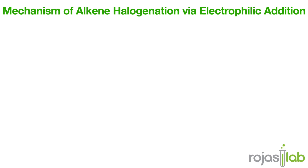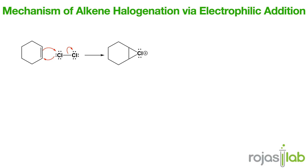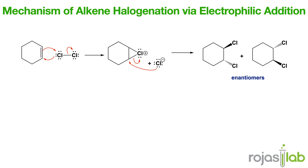Next, let's talk about the halogenation of alkenes. In this mechanism, the pi bond attacks the halogen, resulting in the formation of a halonium ion intermediate. Next, the halide that left performs a nucleophilic attack at one of the carbon positions. This opens the ring and forms a vicinal dihalide. Key points: this always results in anti-addition, and it occurs in generally inert solvents like tetrachloromethane.